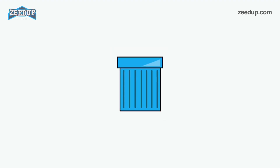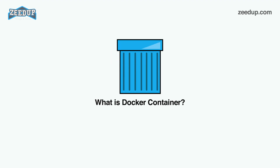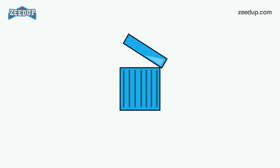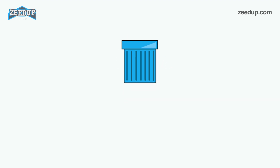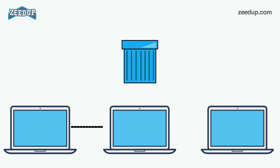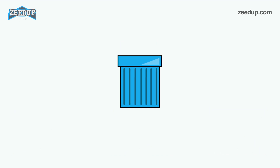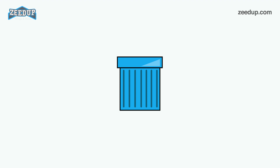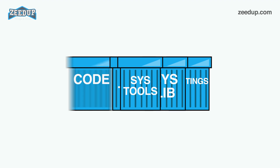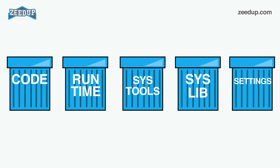What is a Docker container? A Docker container is a standard unit of software that stores up code and all its dependencies so the application runs fast and reliably from one computer environment to different ones. A Docker container image is a lightweight, stand-alone, executable package of software that includes everything you need to run an application: code, runtime, system tools, system libraries, and settings.